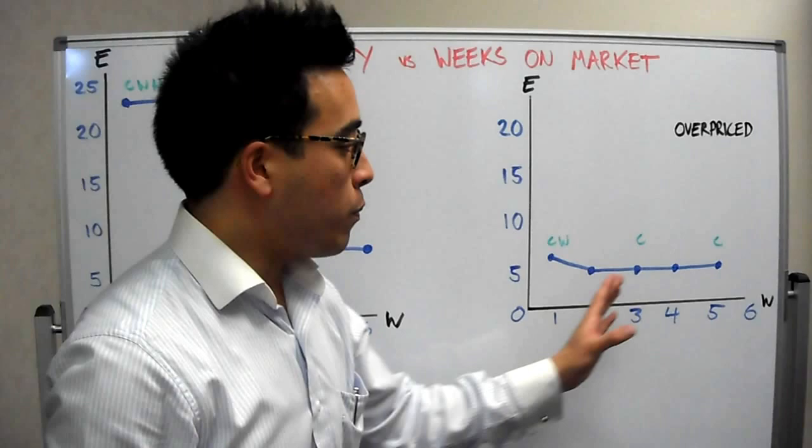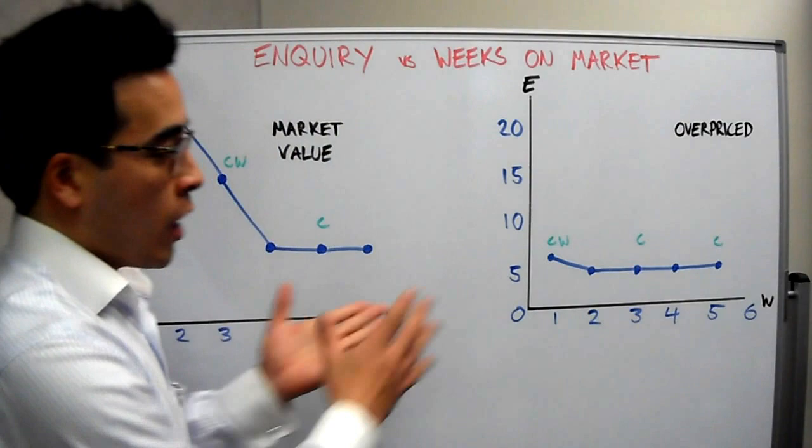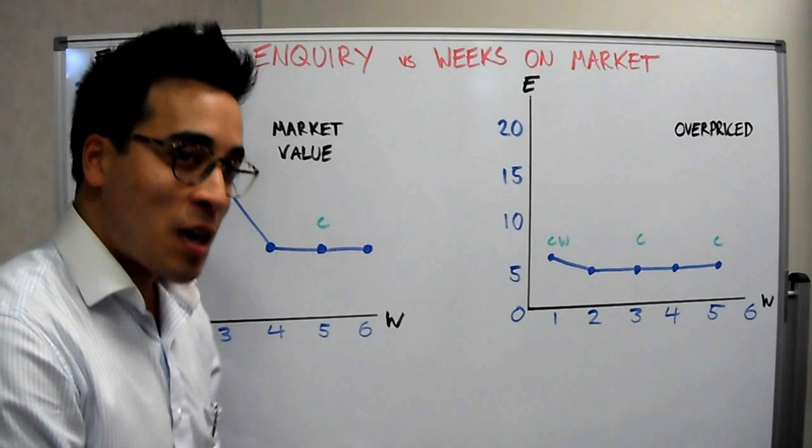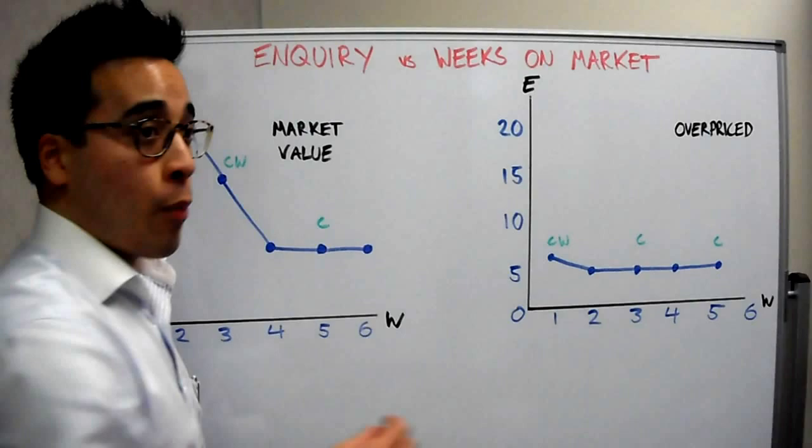This is what happens when you go overpriced. You get a steady flow of people - cold and warm - and then it just goes to cold. You get a steady flow of people, but you don't get the hot buyers as you see here. So in other words, these buyers can't even buy the house. You could have the property overpriced by 50 grand, 100 grand, and these buyers are still going to come. Why? They're skipping, they're still going through all the houses, they're excited about the whole process.